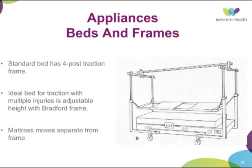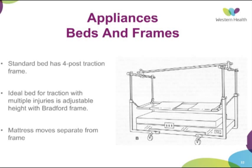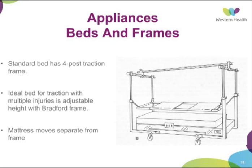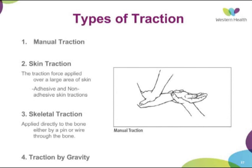Different types of traction are described. We have fixed traction, where traction is applied against a fixed point of counter pressure — the Thomas splint is an example, with the ischial tuberosity as the counter-traction point. We also have sliding traction, which uses the weight of the body part or gravity for counter-traction — you can lift the limb or lift the whole body to create counter-traction. There are also mixed tractions and balanced tractions that use the tension of the whole system or pulleys as counter-traction.